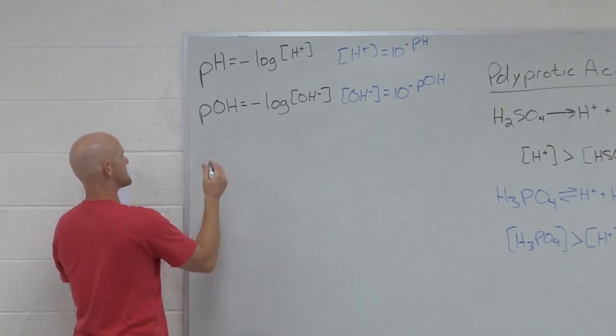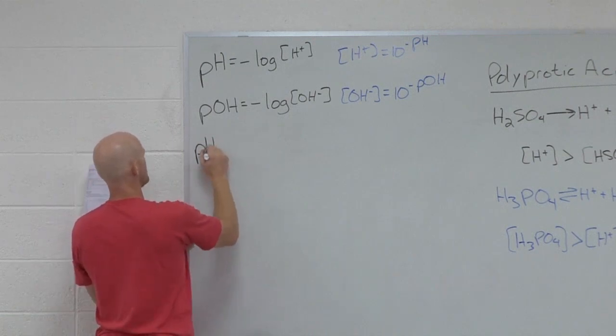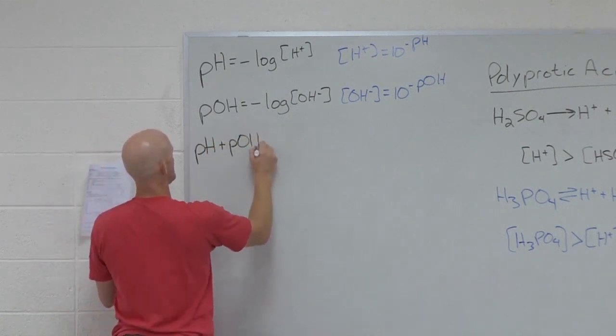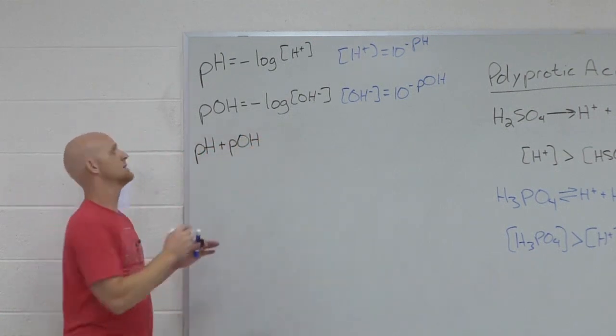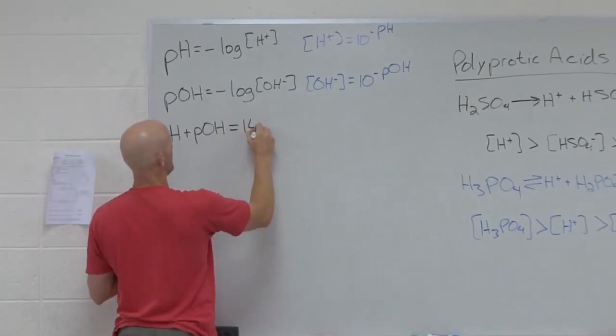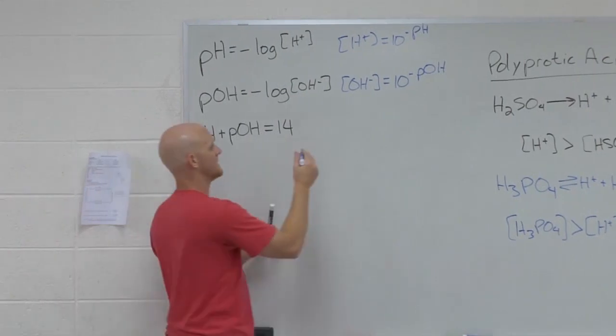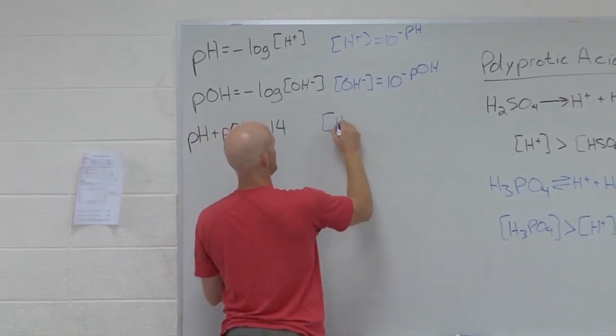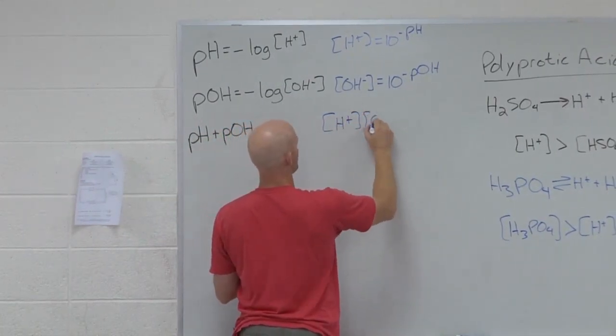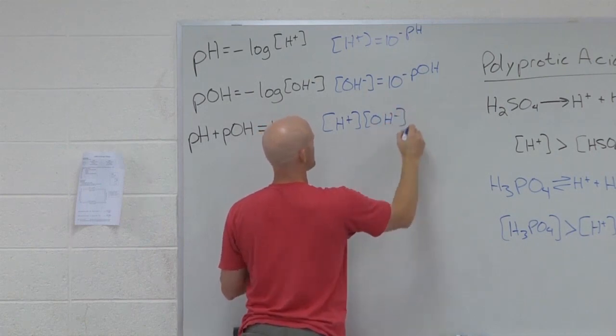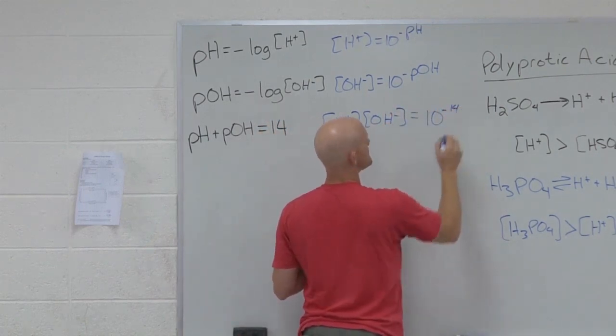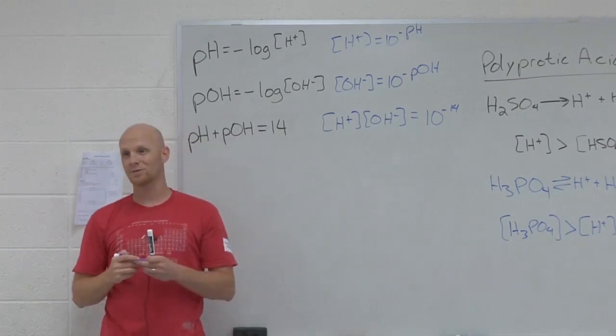The last part of this, something you guys probably remember from high school, is that pH and pOH add up to 14. Where does that come from? It comes from kW. It turns out that the hydrogen ion concentration times hydroxide, the product of that is 10 to the negative 14. They call that kW.